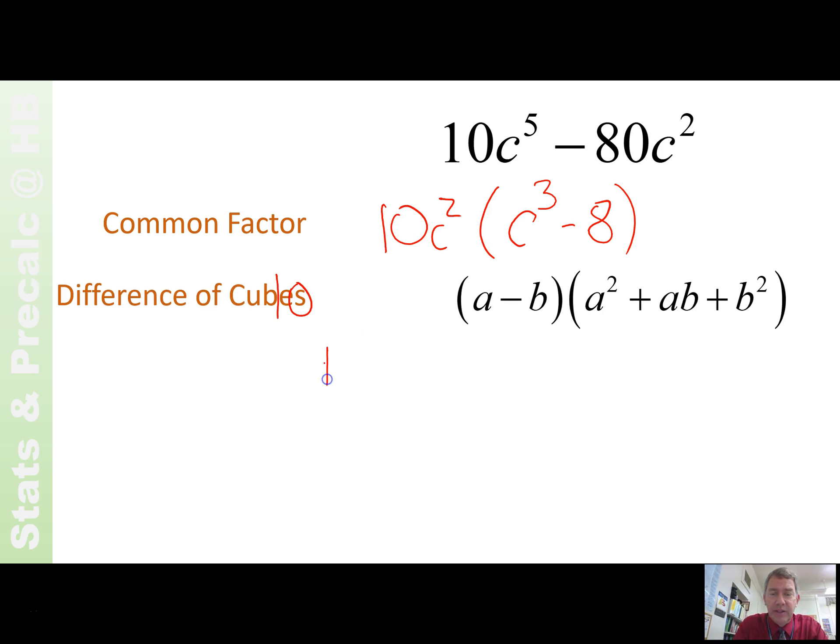That difference of cubes will factor. The 10c squared stays around. The difference of cubes will factor as c minus 2, c squared plus 2c plus 2 squared, and 2 squared is 4. There we have it, done and done.